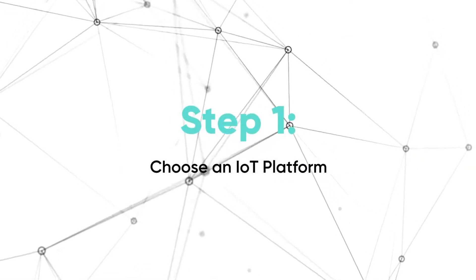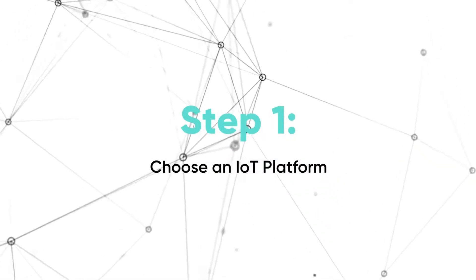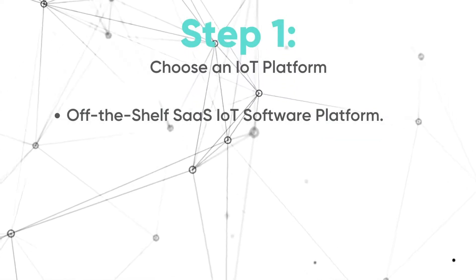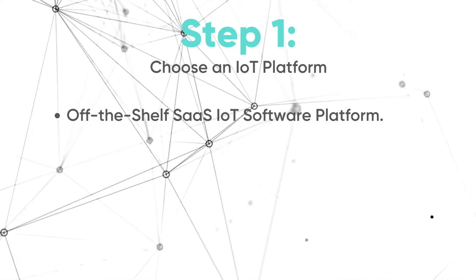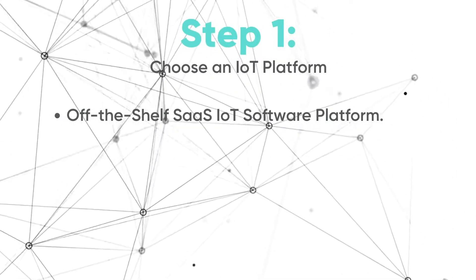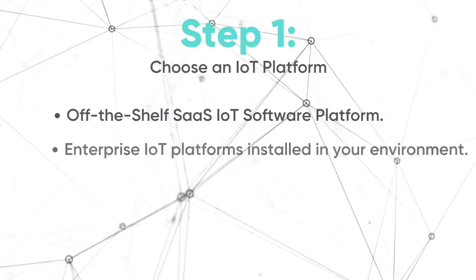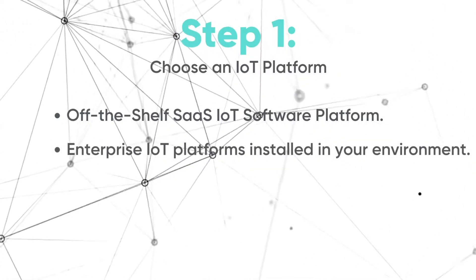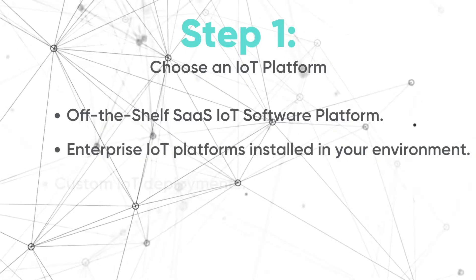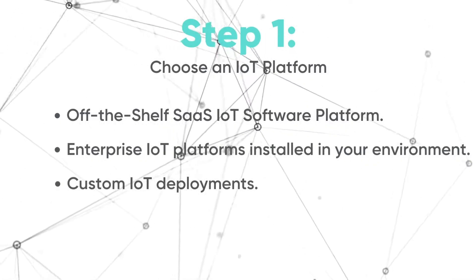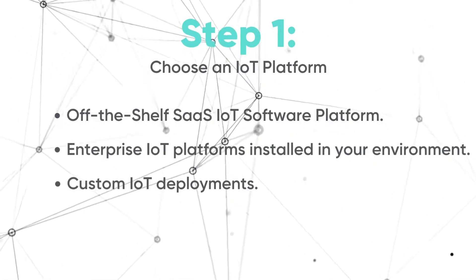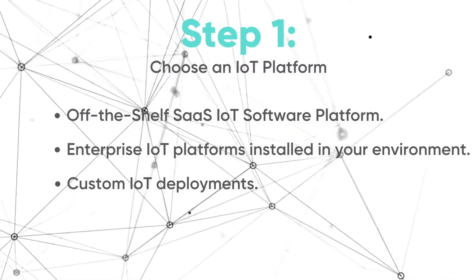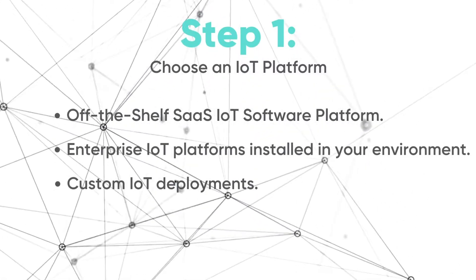Step one: choosing an IoT platform. A simple solution would be the use of an off-the-shelf third-party SaaS product. Another option is installing an enterprise IoT platform in your environment. And a third option is working with an integrator for more custom deployments, where, for instance, an MQTT broker or backup approach would be desired.